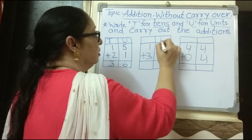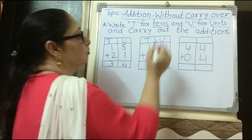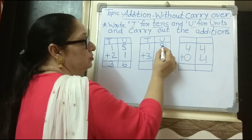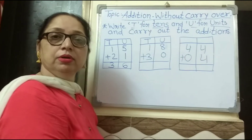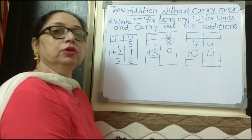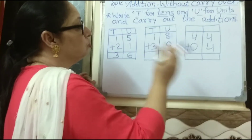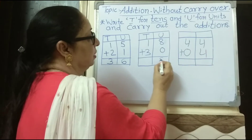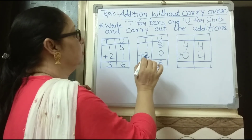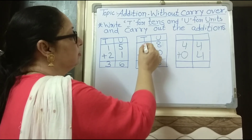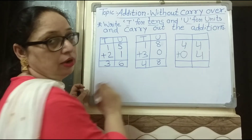Next number: eighteen and thirty. Write U for units and T for tens. The units digit is eight, and the bottom number is zero. Zero means nothing, so eight stays as is — eight units. One ten plus three tens equals four tens. The number is forty-eight.